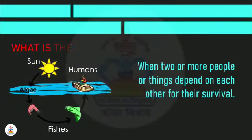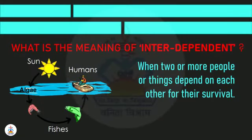Children, let us learn what is the meaning of interdependent. The meaning of interdependent is when two or more people or things depend on each other for their survival.